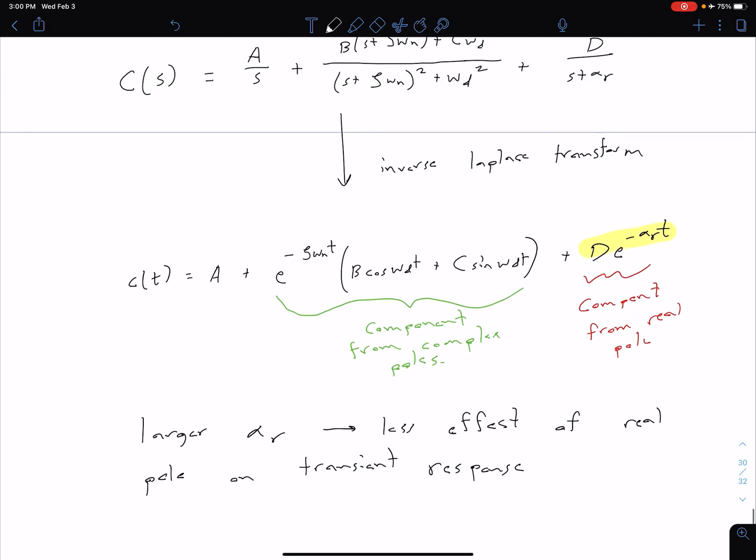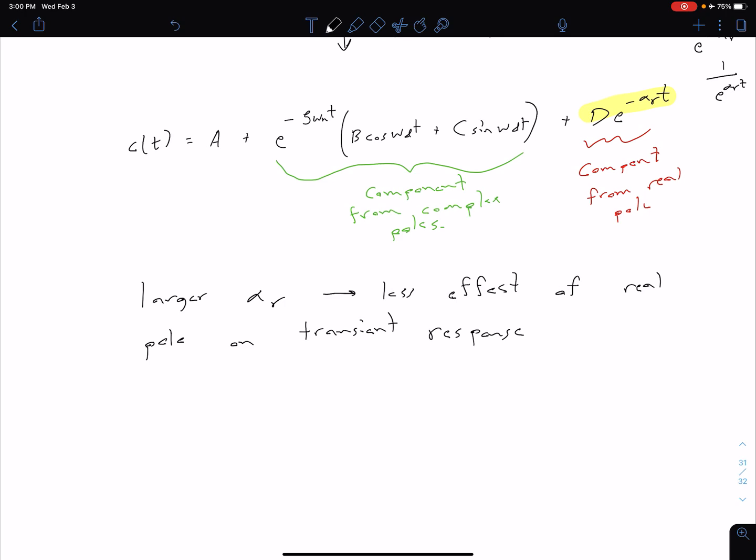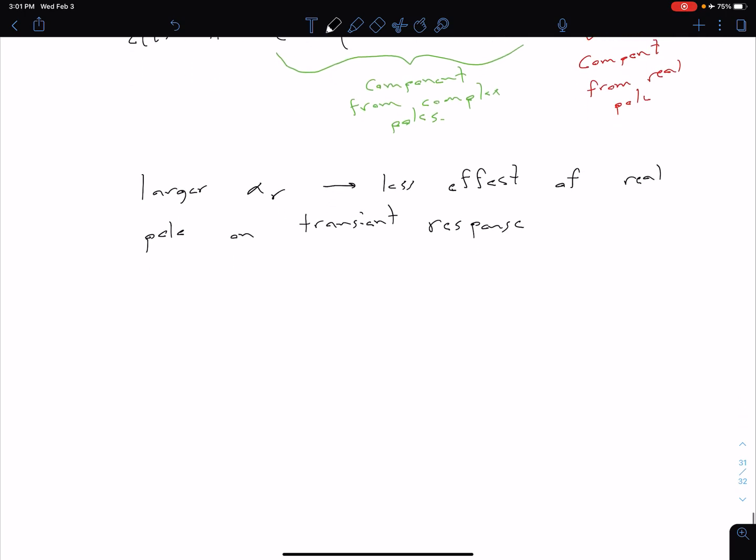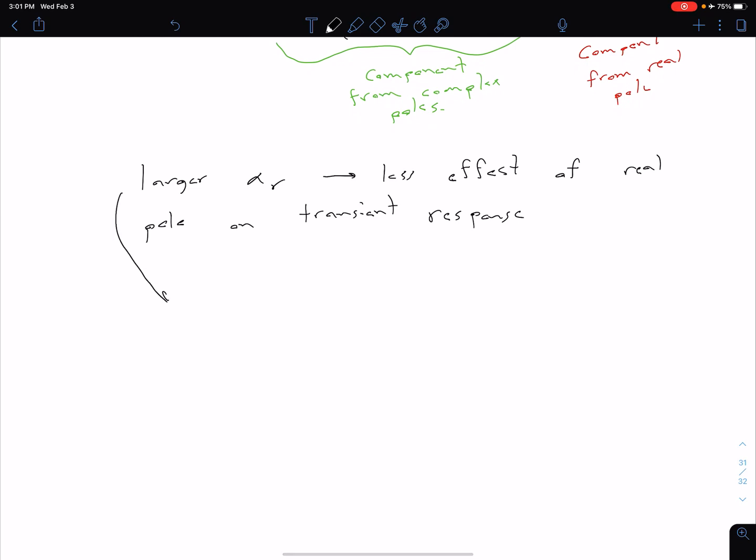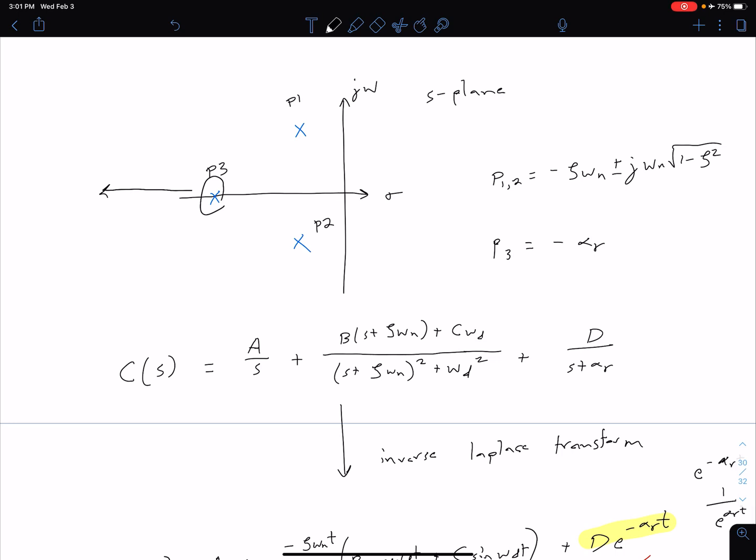We can consider the extreme case, looking at this exponential term here. If our αr goes to infinity, of course we'd have zero, because we could rewrite this e^(-αr·t) as 1/e^(αr·t). So as that αr·t becomes really large, that number is going towards zero. As that becomes more and more negligible, our approximation that this is a second order system becomes more accurate. One thing to notice relating this back to our S-plane is that this larger αr corresponds to being further left in our S-plane. So if this pole is further left, we're going to have a better approximation.